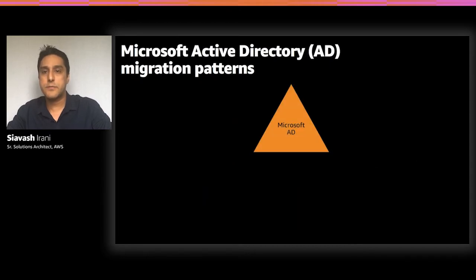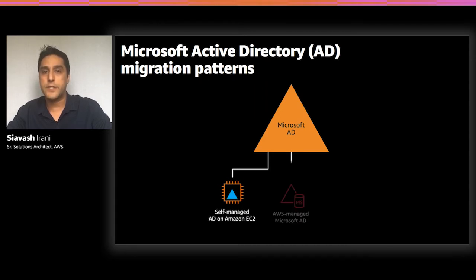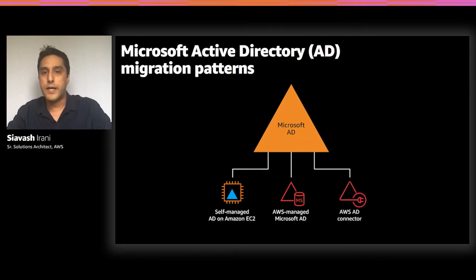There are different patterns for migrating Microsoft Active Directory to the cloud. The first option is self-managed Active Directory on EC2, which requires customers to promote domain controllers in EC2 and manage it themselves. The second option is AWS Managed Active Directory, which allows more integration with AWS services. The third option is AWS Directory Service AD Connector, a directory gateway that redirects directory requests to your on-premises Active Directory without caching any information in the cloud.